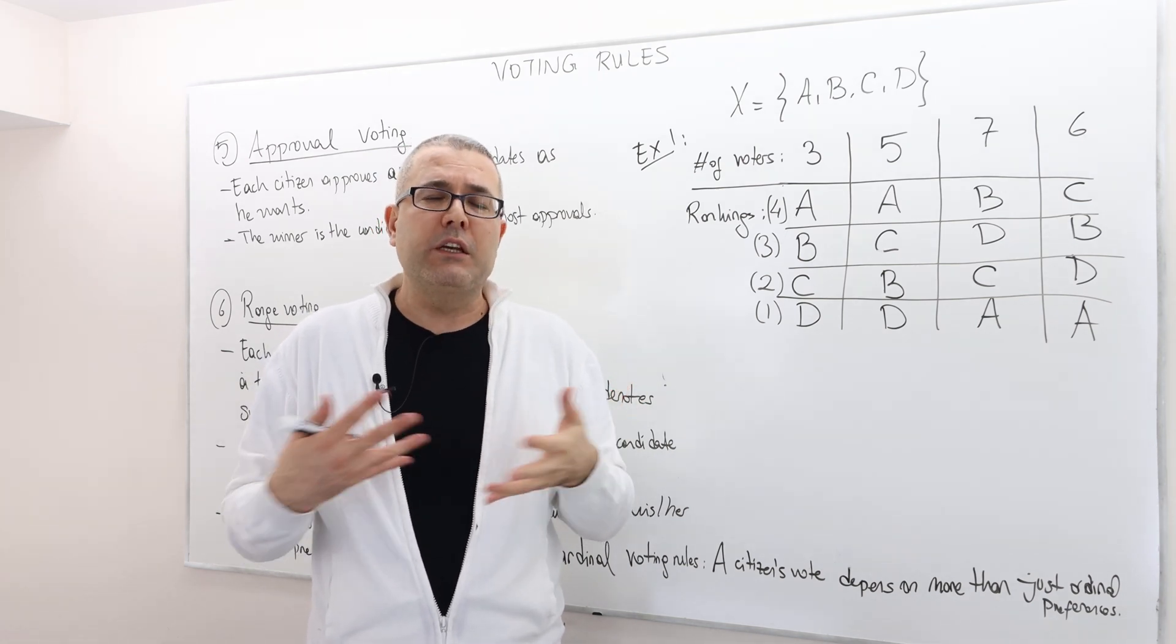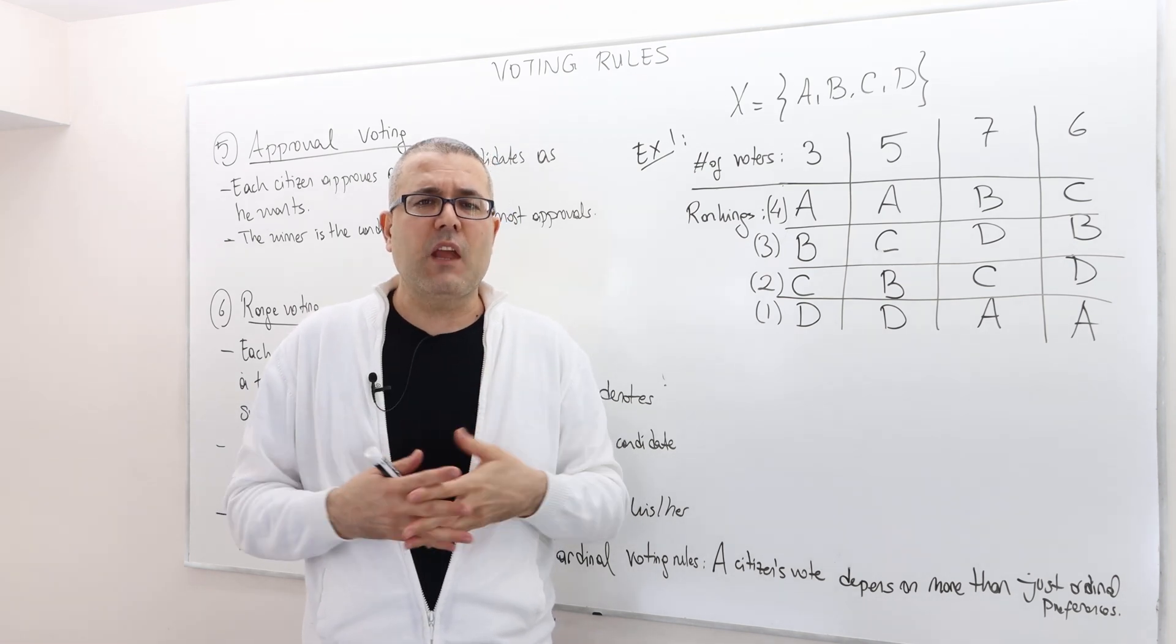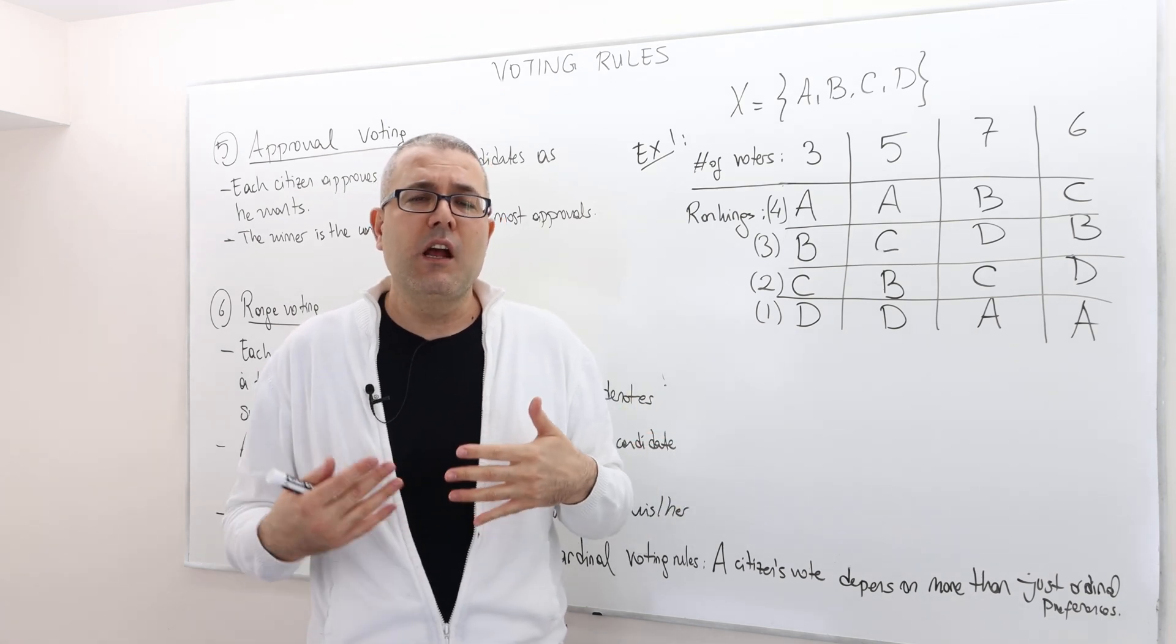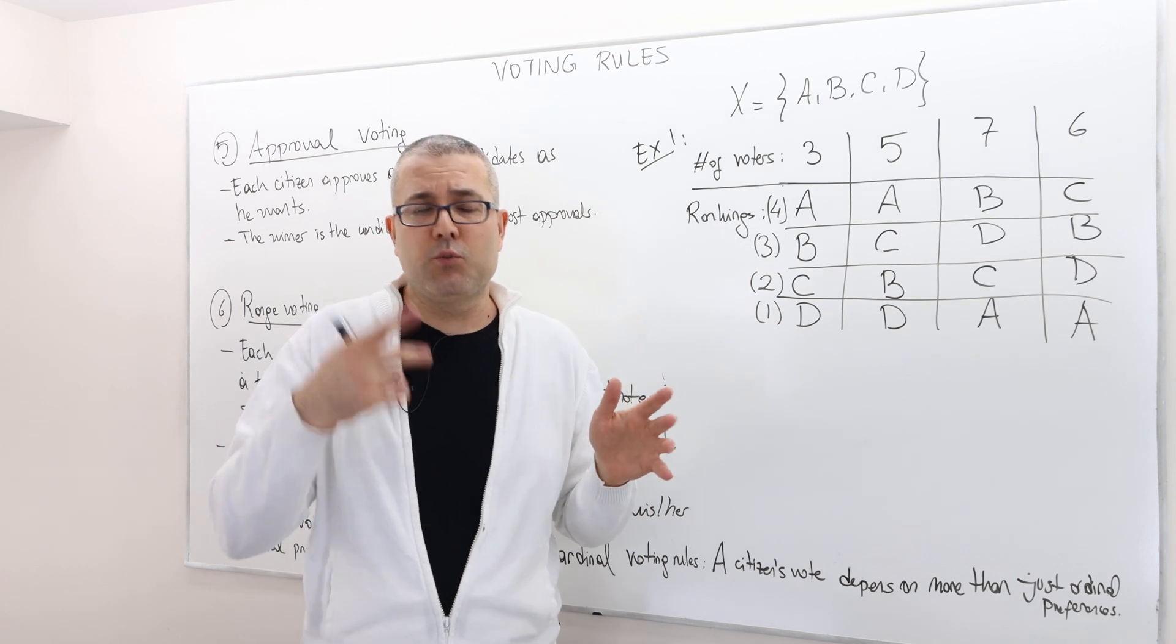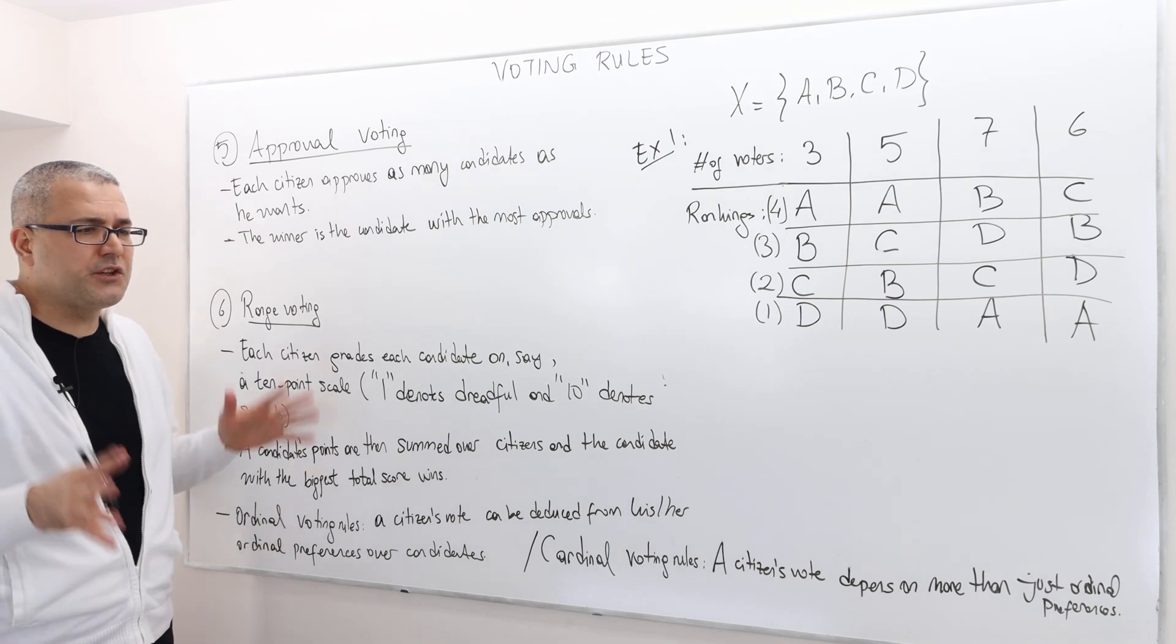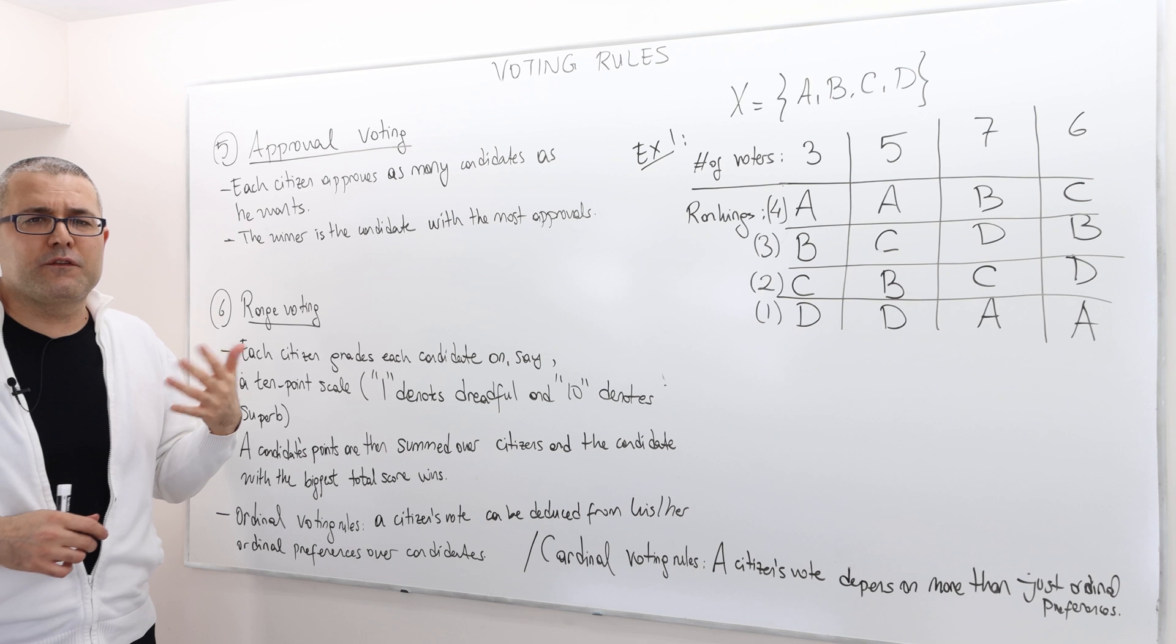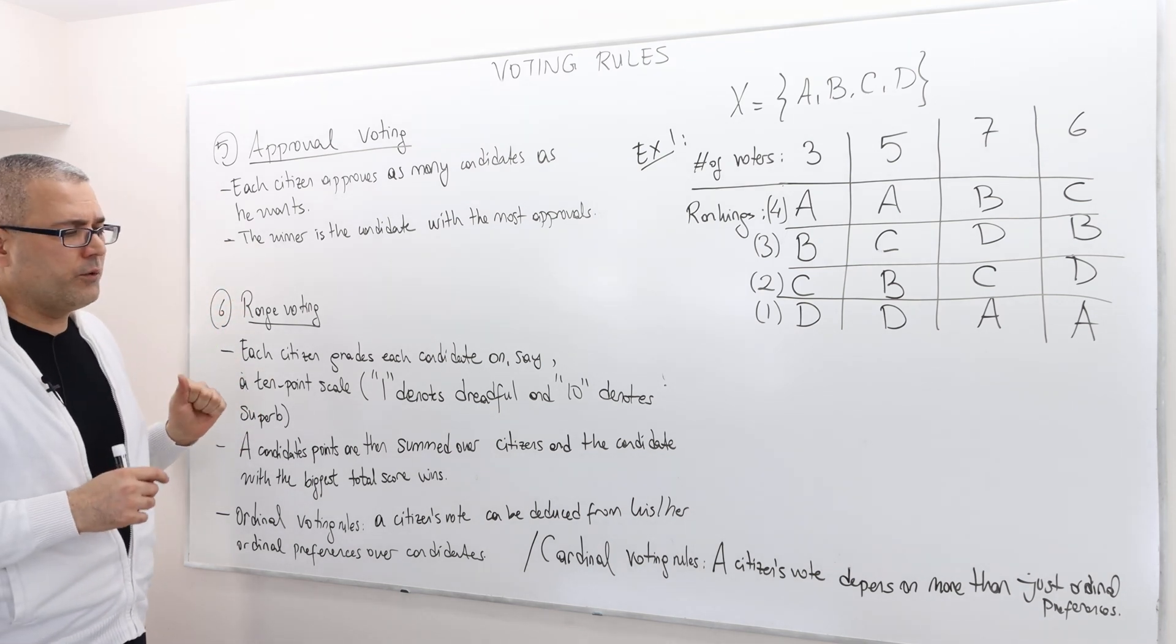So if you want to include intensity, how much a voter actually prefers one alternative or one candidate over others, well, then we need to extend our preference domains, which is what we are going to do in the next episode. However,